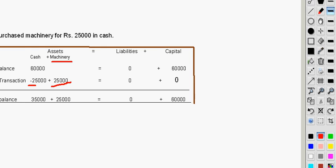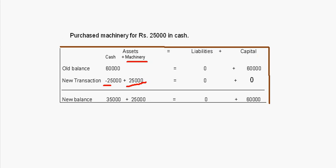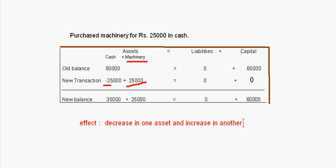In the next transaction, the cash balance has decreased by 25,000 and it has become 35,000 — the new balance — and machinery has become 25,000. The effect of this is decrease in one asset, that is cash, and increase in another asset, that is machinery. After this transaction also the balance is equal: 60,000 is equal to 60,000.